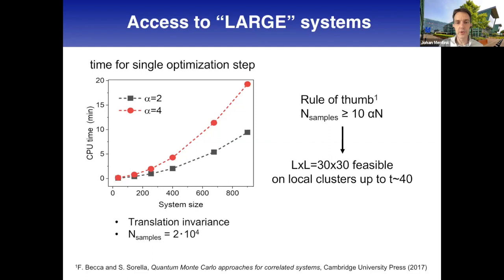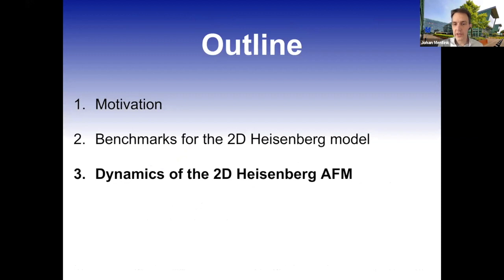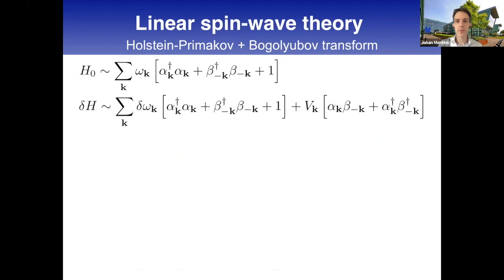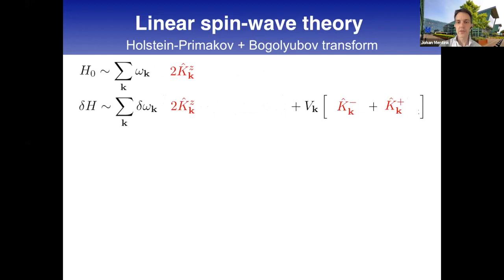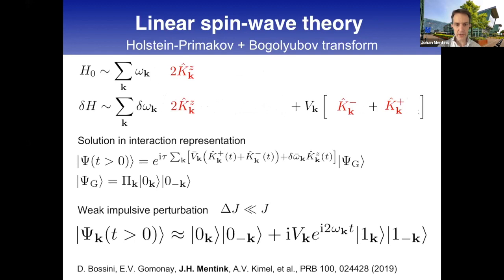Following the book of Becca and Sorella, also speakers at this conference, if we use the rule of thumb that the number of samples should be 10 times larger than the number of parameters, we estimate that even linear dimension 30 for the square lattice is accessible on our local cluster with about 60 ordinary CPUs, no GPUs. Now let's try to do some dynamics of this Heisenberg antiferromagnet in regimes we could not access so far.